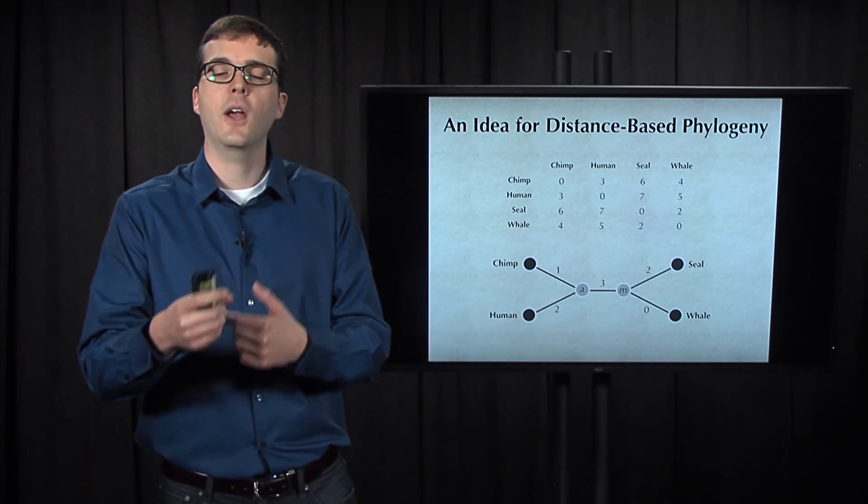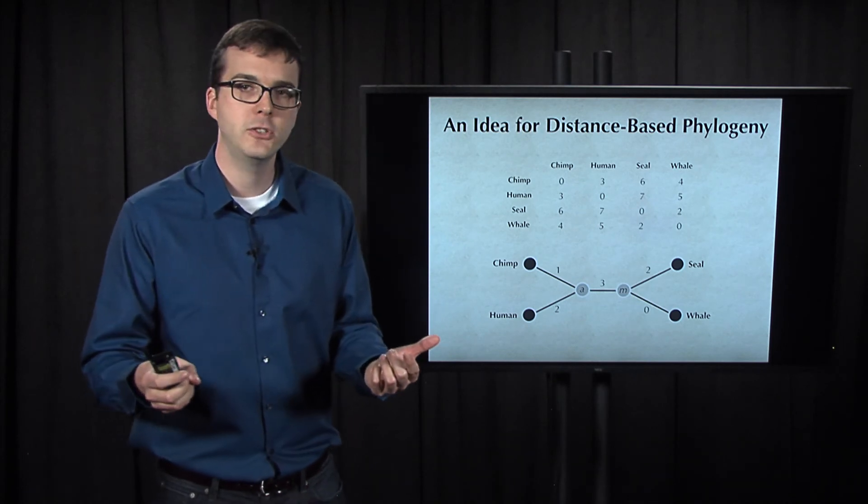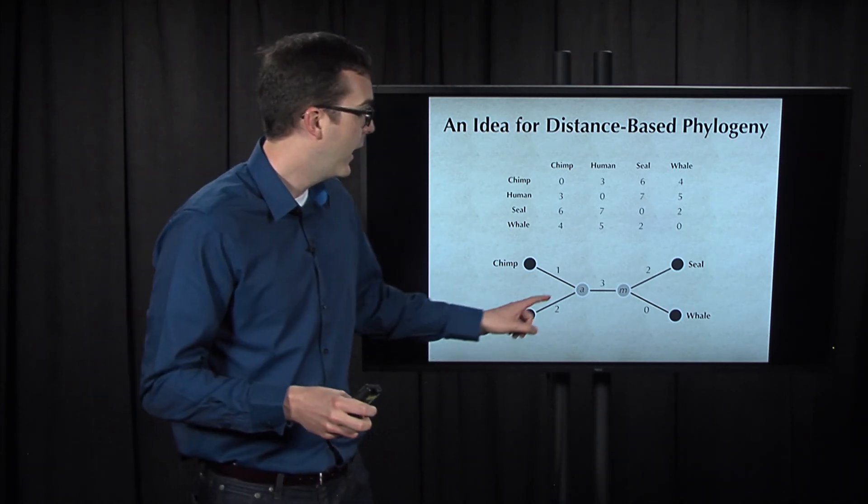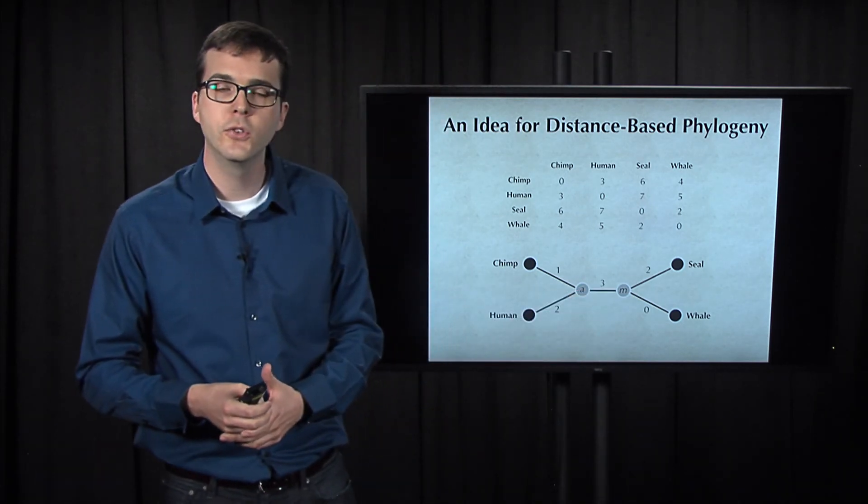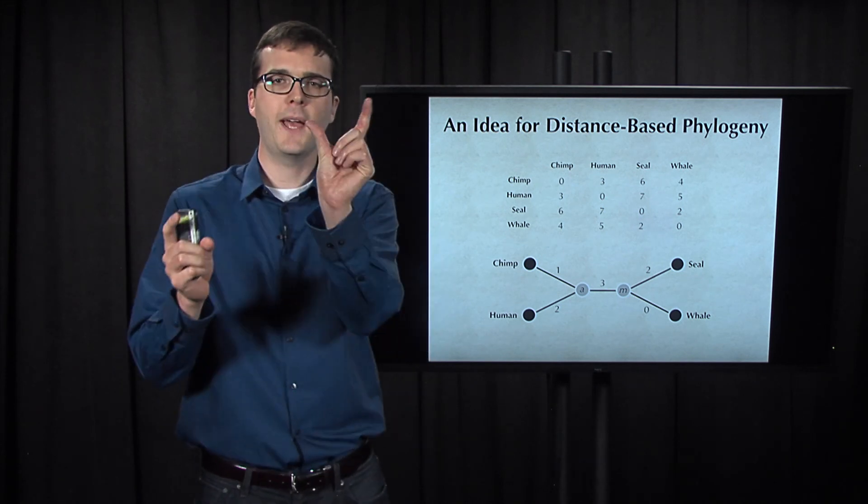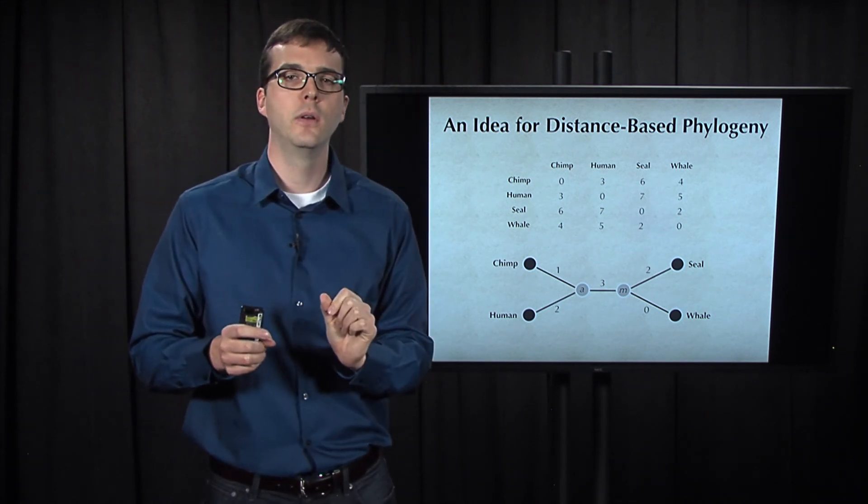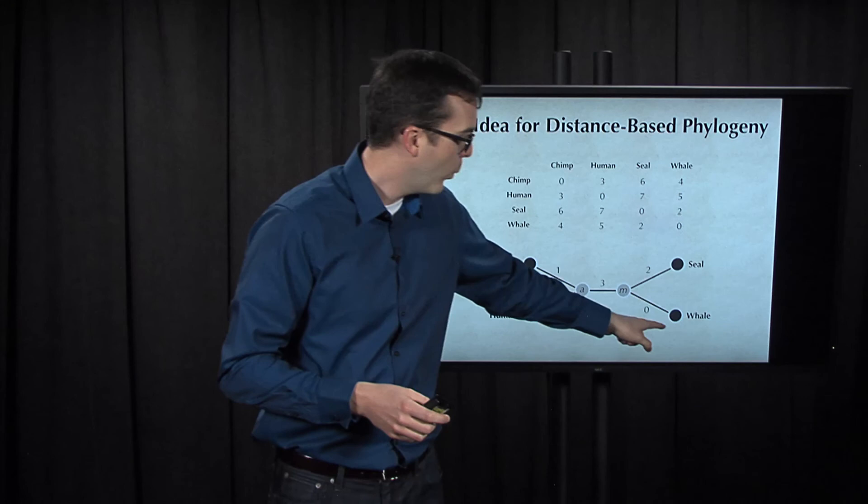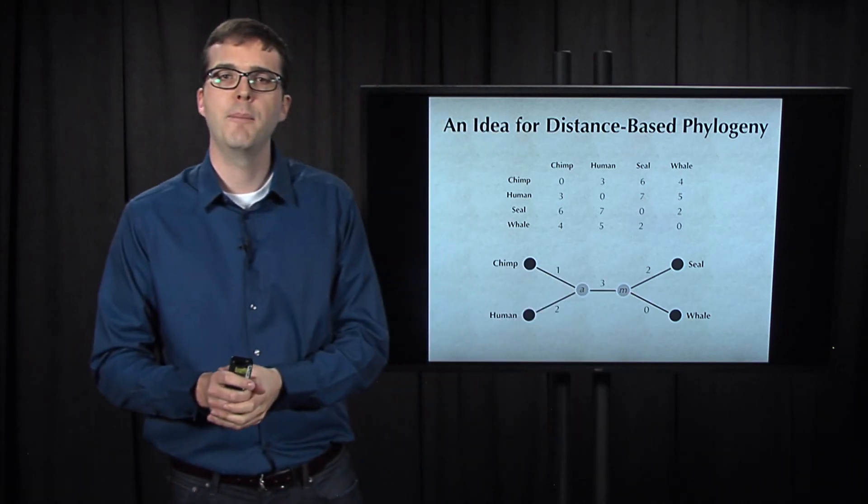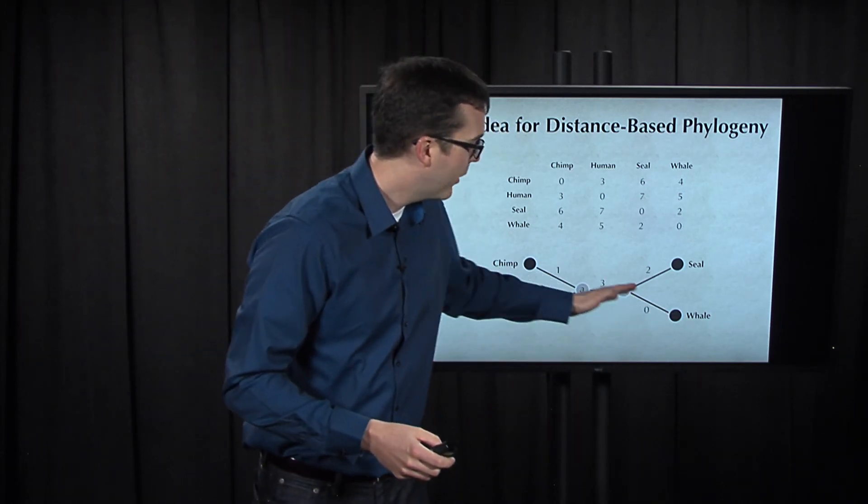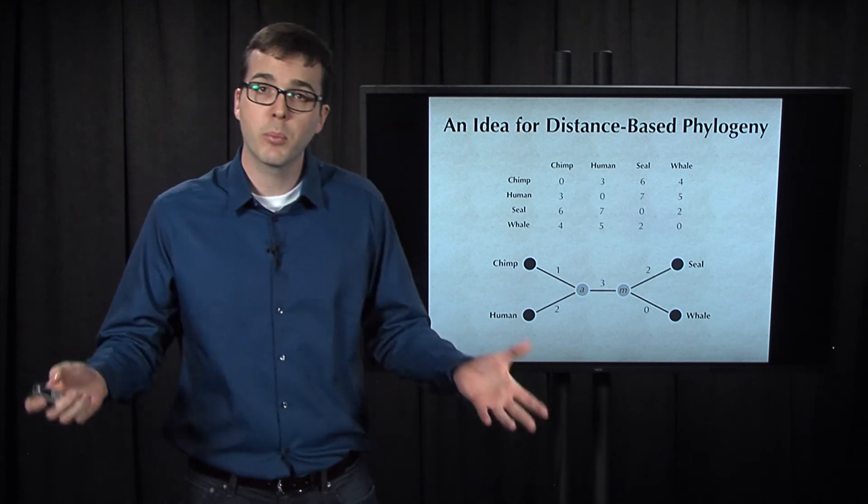In this case, rather than carrying along a weight zero internal edge, and by internal edge I mean an edge that connects two internal nodes, we would simply compress a and m into a single node. Now, we don't do this for whale connected to m because we can't make whale an internal node of our tree because it's a present day species.